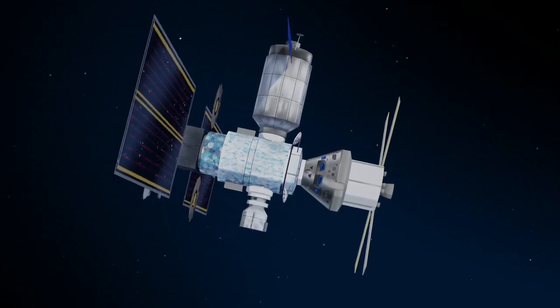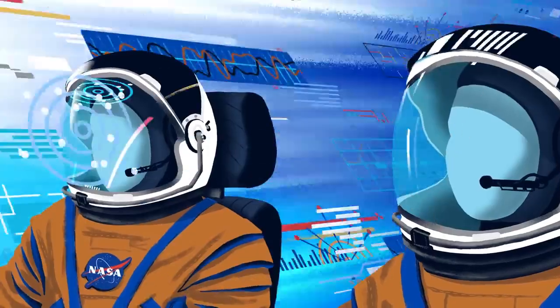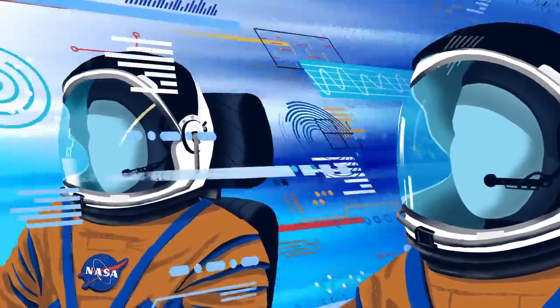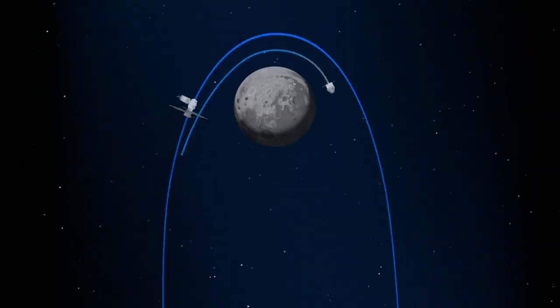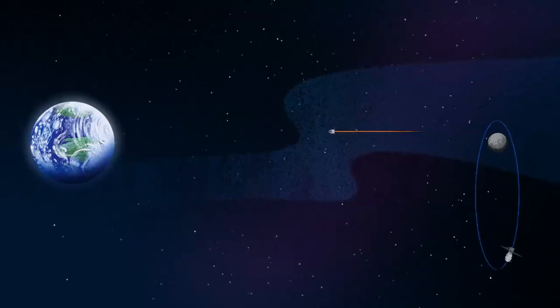Once back aboard the Orion spacecraft and undocked from Gateway, the crew fire their engine once to break out of the halo orbit, and once again to sling the spacecraft around the Moon, placing it on a multi-day trajectory back towards Earth.